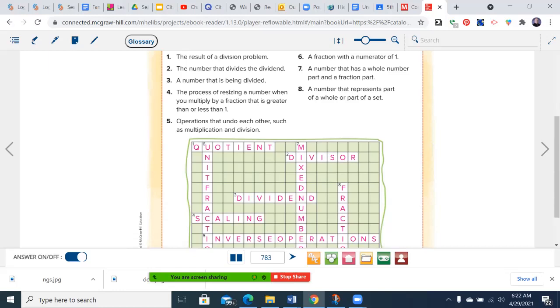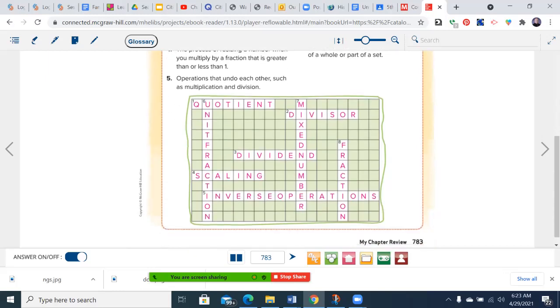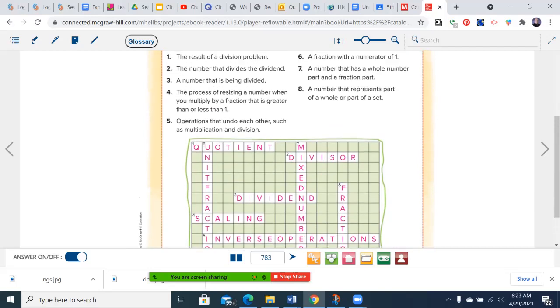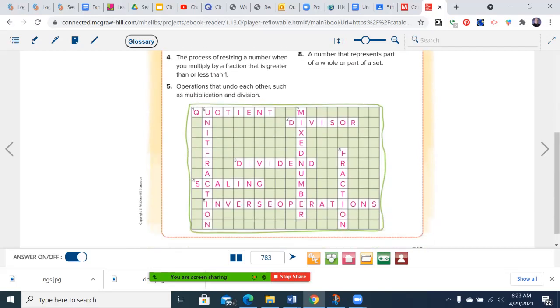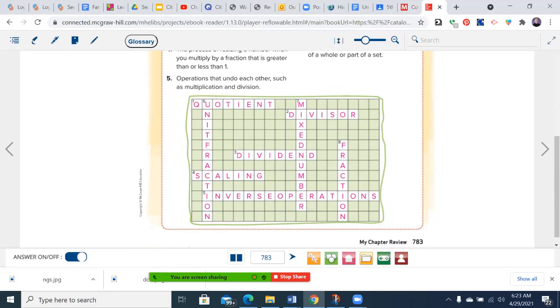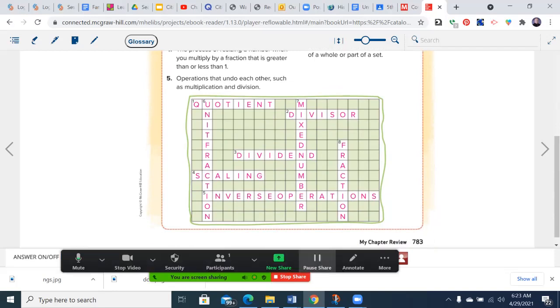Number four across, the process of resizing a number when you multiply by a fraction that is greater than or less than one, and that is scaling. Number five across, operations that undo each other, such as multiplication and division or addition and subtraction, are inverse operations.